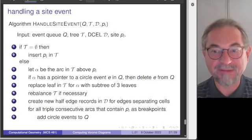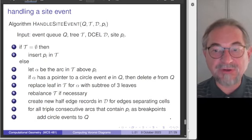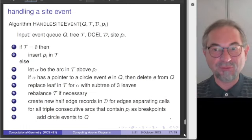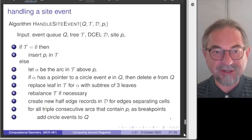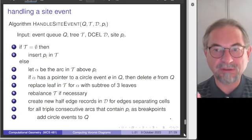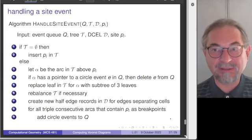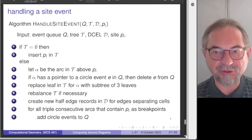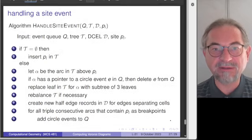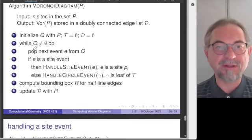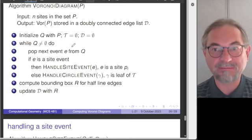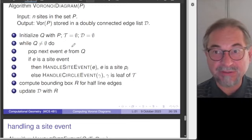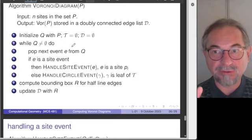For a site event: if it is the first site encountered, we just insert it into the balanced binary search tree. If the tree is not empty, we insert the new site, adjust the beach line, and may need to rebalance. A new arc coming in could lead to a circle event and therefore a new vertex. Whenever we have a new site, we have new bisectors — new half-edge records to update. For every triple involving the new site, we add circle events.